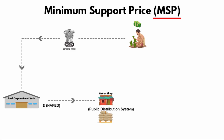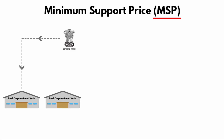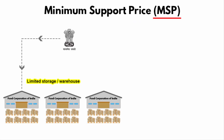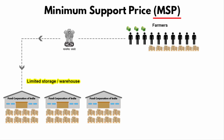What you have to understand is that the government of India does not have enough warehouses to store grains. That means the government has a quota — only that much will be bought, because anything more than that will be a problem in terms of where to store it.